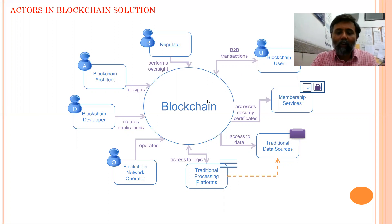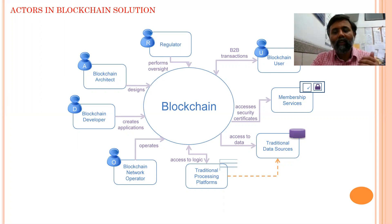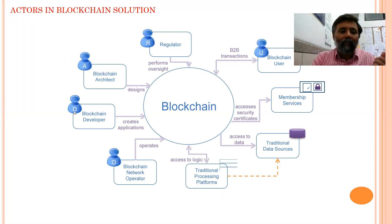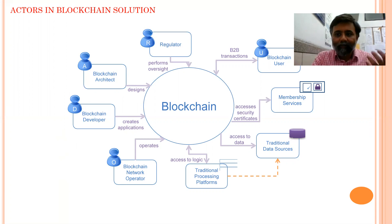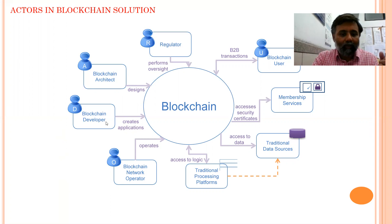The next actor is the blockchain user — this is the user who will use the blockchain platform, but the blockchain user may not be aware of the technical background. Then we have the regulatory body, the blockchain developer, and the blockchain architect. The architect is responsible for designing the blockchain solution, while the developer creates client applications and smart contracts.